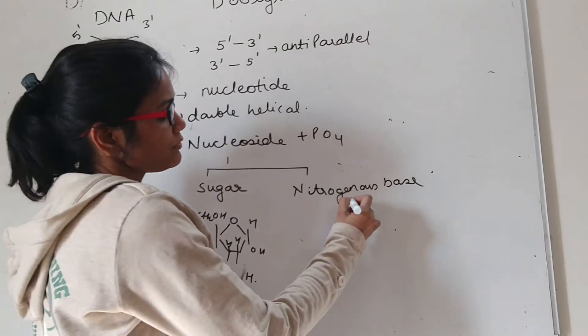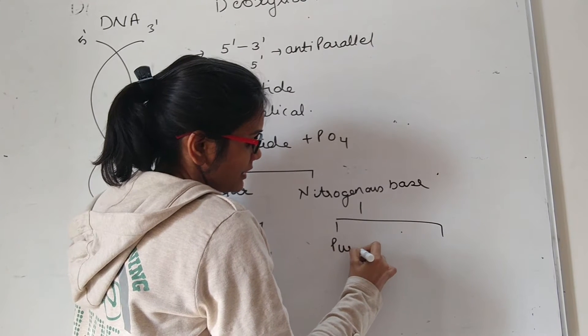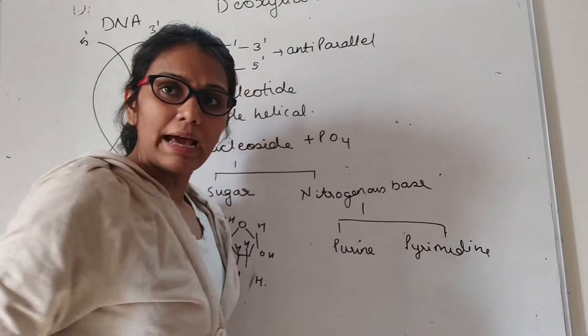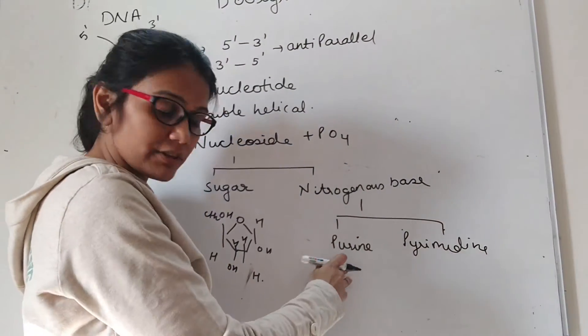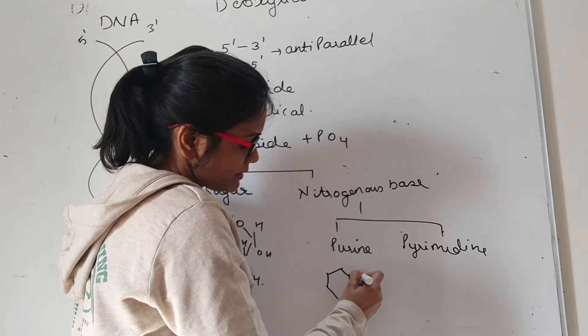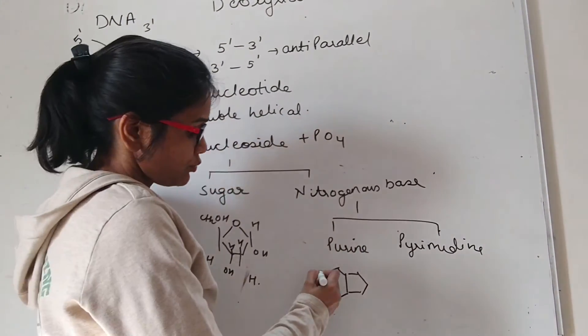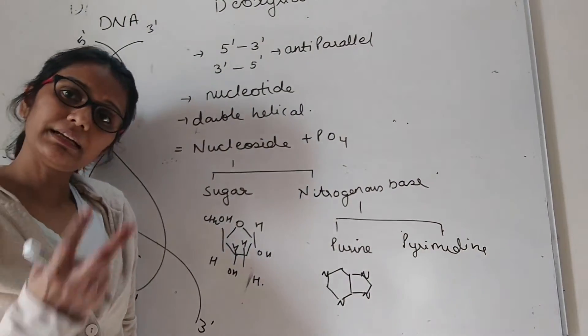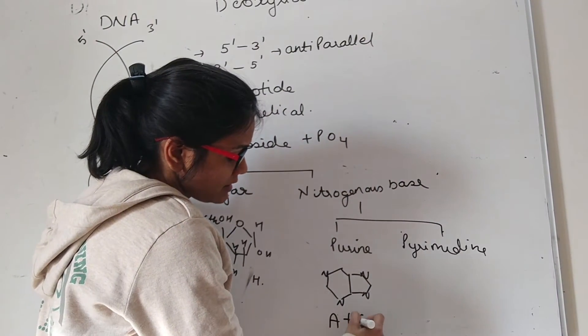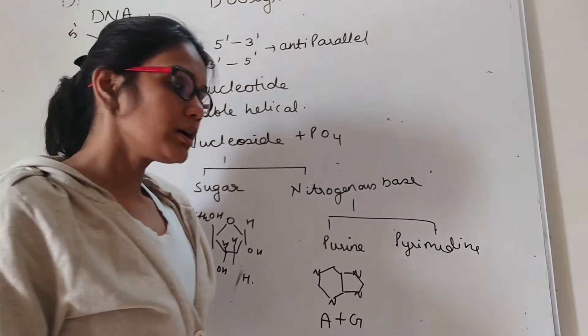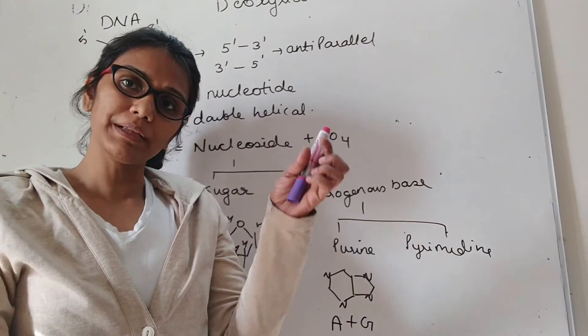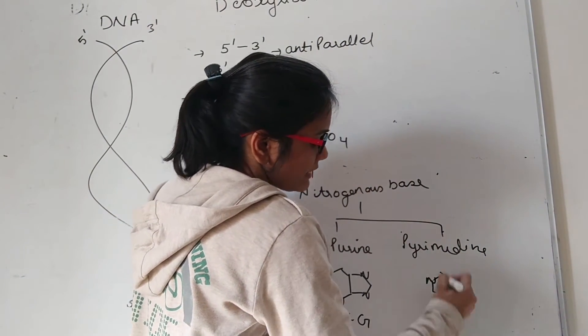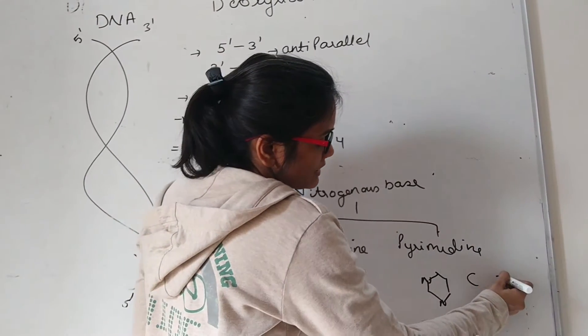The nitrogenous bases are of 2 types. One is purine and one is pyrimidine. Purine, as you say, the name is smaller but the ring will be bigger. It will be carrying 6 carbons and nitrogen at positions 1, 3, 7, and 9. There are 2 types of purine: adenine and guanine. A for adenine, G for guanine. Pyrimidine, the name is big but the ring will be compact. It will be only 6 carbons. 1 and 3 will contain the nitrogen, and it contains cytosine and thymine.